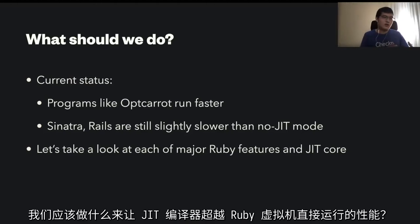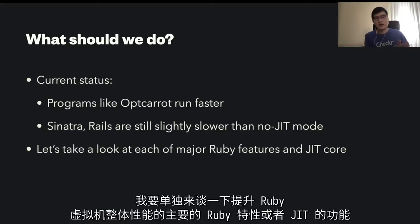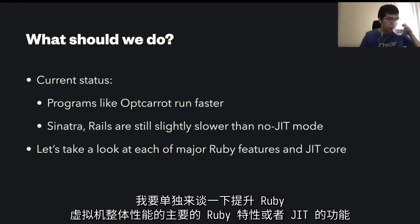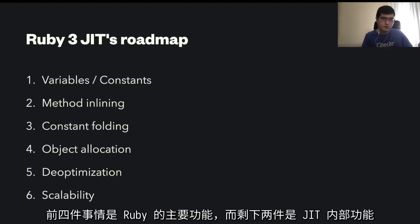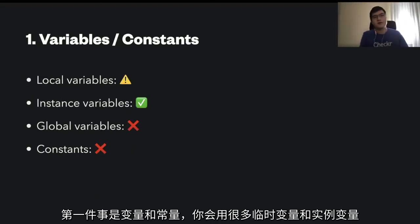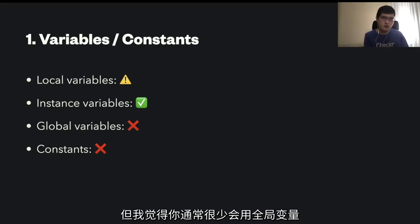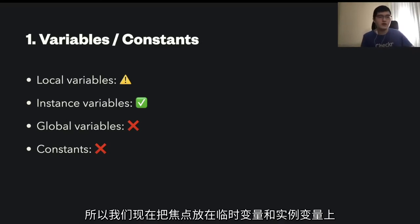What should we do to make JIT compiler performance faster than virtual machine? I'd like to talk about each of the major Ruby features or JIT functionalities to optimize the overall performance. These six things are what I'd like to talk about today. The first four are major Ruby features and the other two are for JIT compiler internals. First thing is variables and constants.